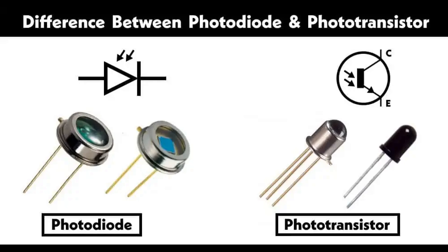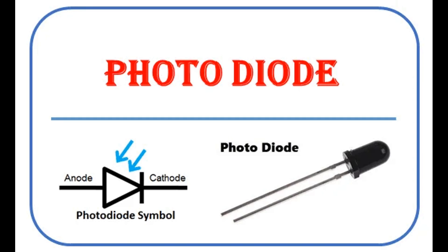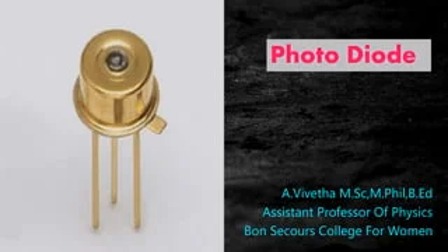Characteristics — Responsivity: This is the ratio of the photocurrent to the incident light power and varies with the wavelength of light. Dark current: This is the small current that flows through the photodiode even in the absence of light, primarily due to thermal generation of charge carriers. Noise: Various noise sources — thermal noise, shot noise, etc. — can affect the performance of a photodiode, especially in low-light conditions.